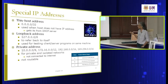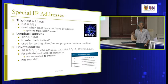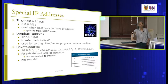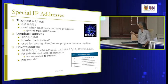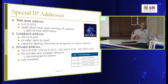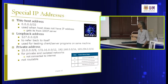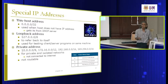The second special address is 127.0.0.0 slash 8. Slash 8 means the first 8 bits cannot be touched — any address beginning with 127 is reserved. You cannot use 127.0.0.0, 127.0.0.1, or 127.1.5.3 — anything starting with 127 cannot be used. This is used as a loopback address, meaning the packet is sent back to the same machine — just like a mirror.